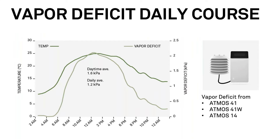The transpiration efficiency is a constant for a given species and cultivar divided by the daytime vapor deficit. The vapor deficit is the saturation vapor pressure minus the vapor pressure of the air. Since the saturation vapor pressure is strongly temperature dependent, the vapor deficit is near zero at night when the temperatures are low, and it's large at midday when temperatures are high. The graph shows a typical daily pattern. The daily average vapor deficit here is 1.2 kilopascals, but the daytime average is 1.6 kilopascals. Since photosynthesis occurs during the day, we want to use the daytime average, not the daily average.